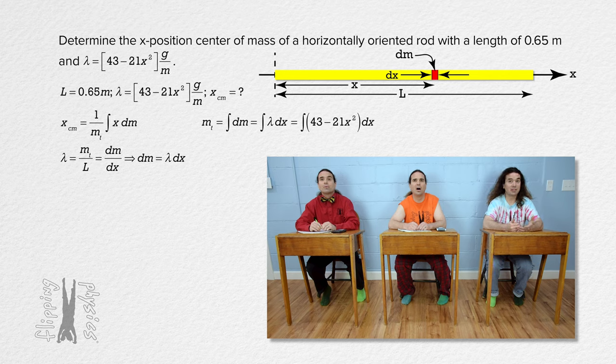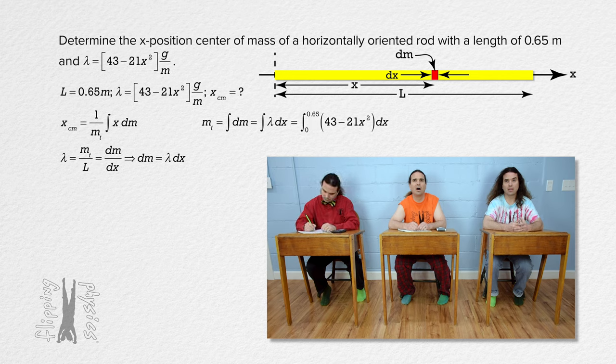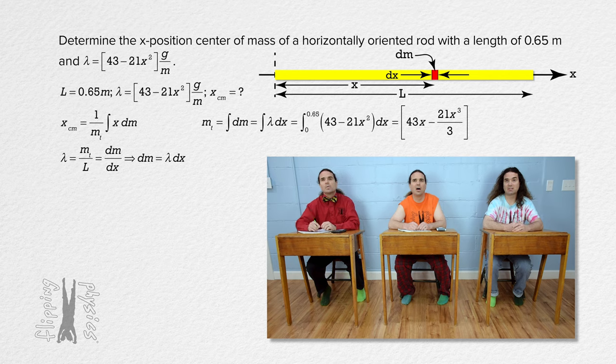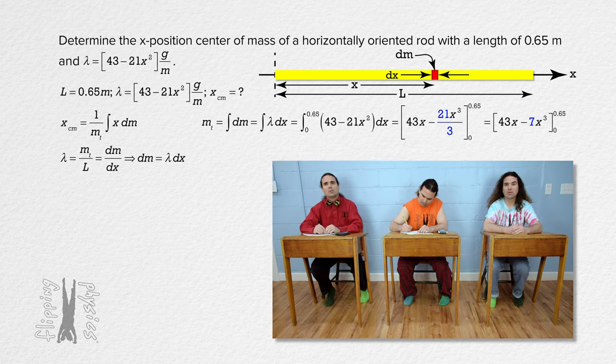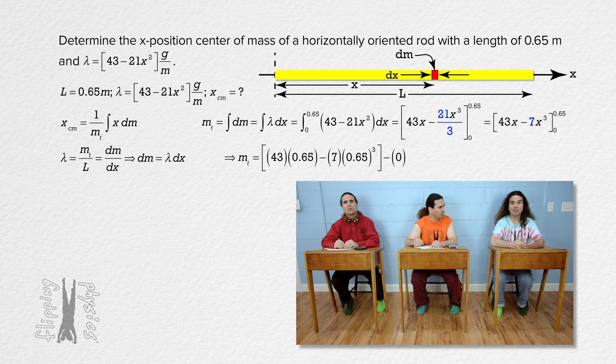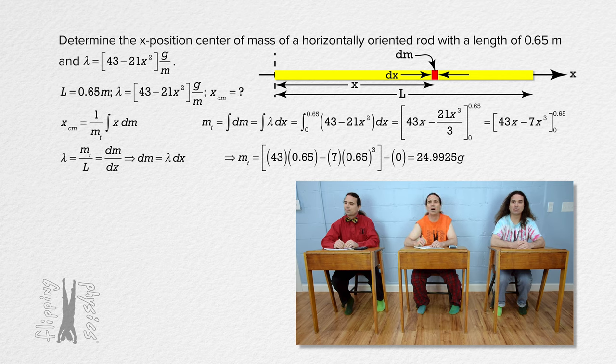And this is a definite integral with limits for the x position of dm, which go from the left end of the rod to the right end of the rod, or from 0 to the length of the rod, which is 0.65 meters. The integral works out to be 43x minus 21x cubed over 3, with the same limits as before. 21 over 3 is 7. We can substitute in our limits and we get 24.9925 grams for the total mass of the non-uniform bar.